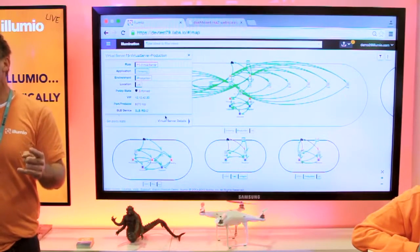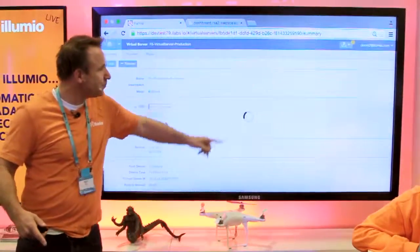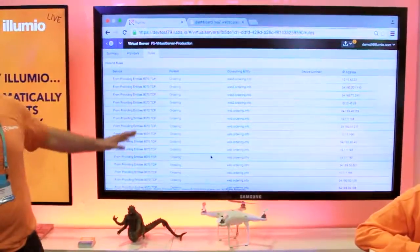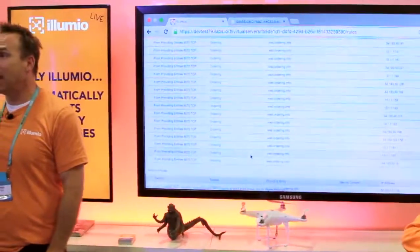We're also programming the F5 LTM in the middle. So we've turned your F5 load balancer into a stateful packet filter. Let's click on it. It just went out and wrote rules for each one of the new web tiers that just spun up inside of Amazon.